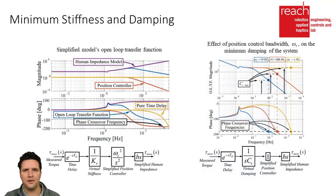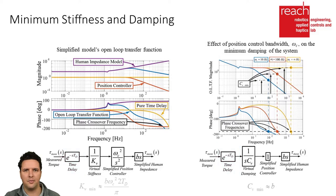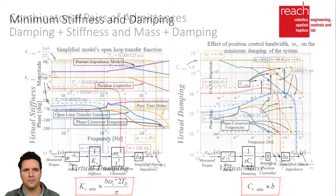Considering high-frequency behavior of the resulting open-loop transfer function results in approximate expressions showing the impact of the human's impedance, the position control bandwidth, and time delay on the minimum pure stiffness and damping an admittance-controlled haptic device can stably render.